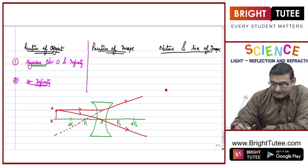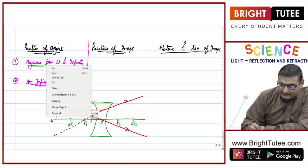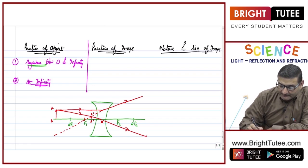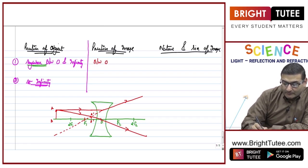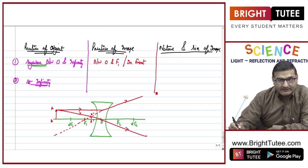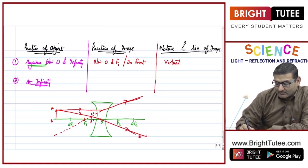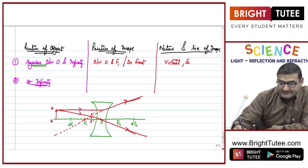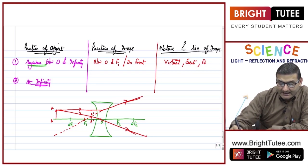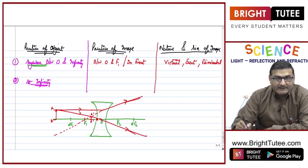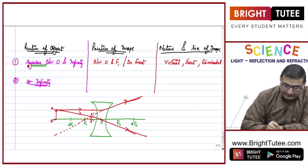These two rays of light are diverging from each other and appear to meet at a point, which gives us the image A'B'. The image is formed between the optical center and f1, in front of the lens. This is a virtual image because the actual light rays are not meeting. It is an erect image, formed above the principal axis, and it is a diminished image — smaller than the object.